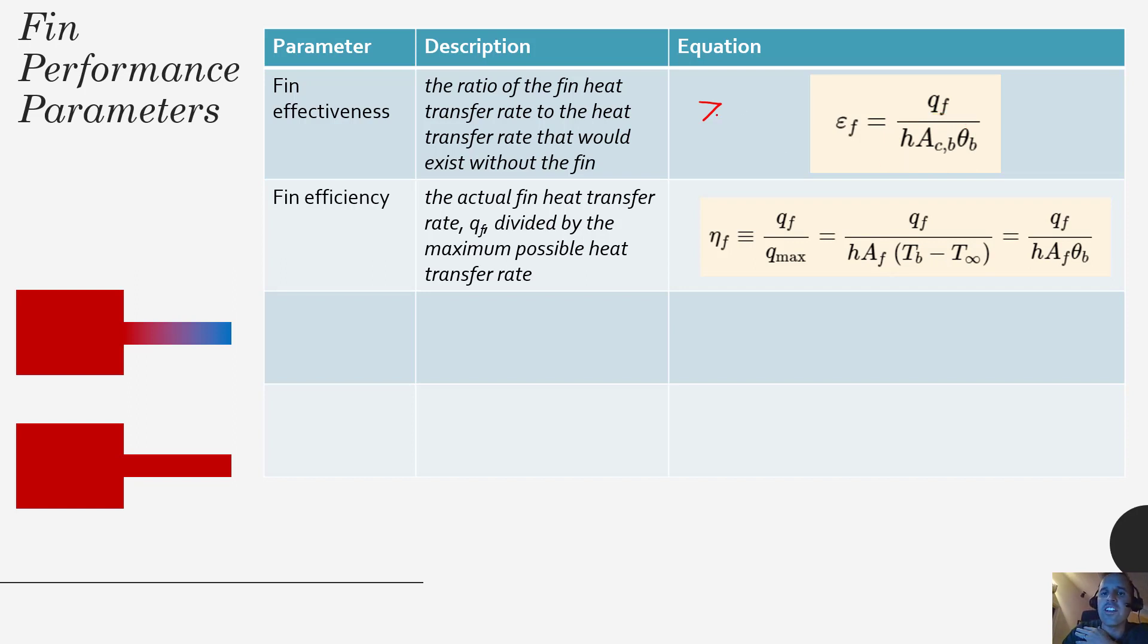So the fin effectiveness tends to be a number greater than 1, whereas fin efficiency is a number between 0 and 1 because you're judging how much heat is being dissipated relative to the best that you could possibly do. Okay, so now let's look at arrays of fins.